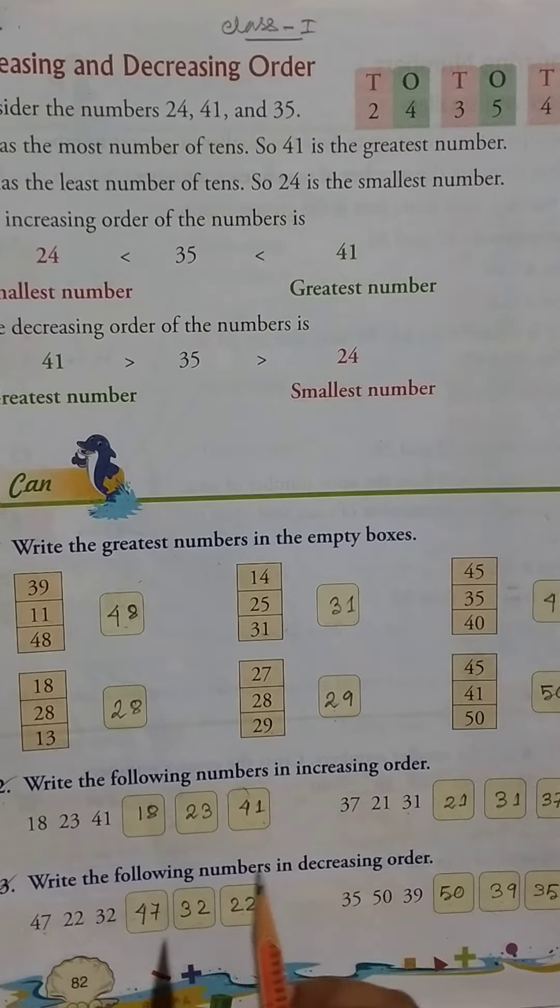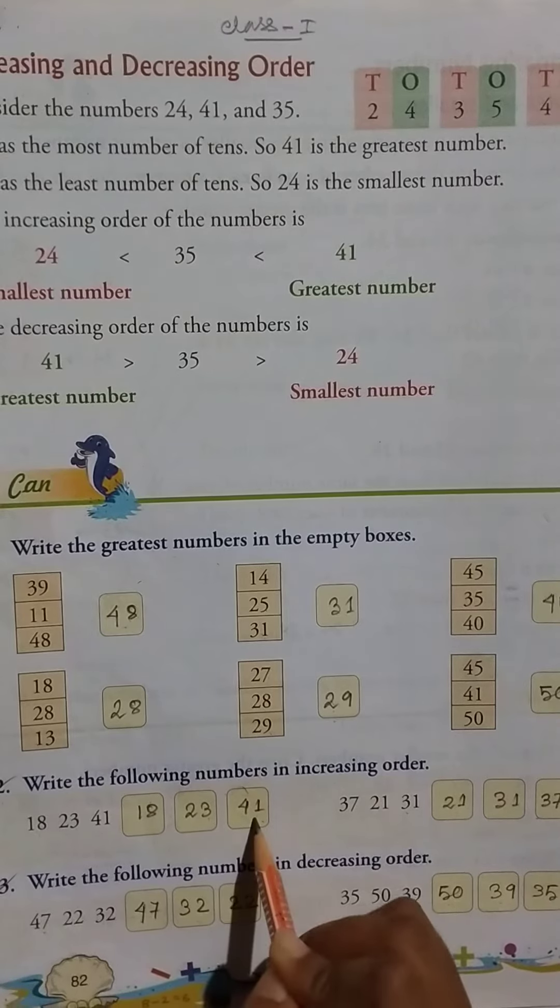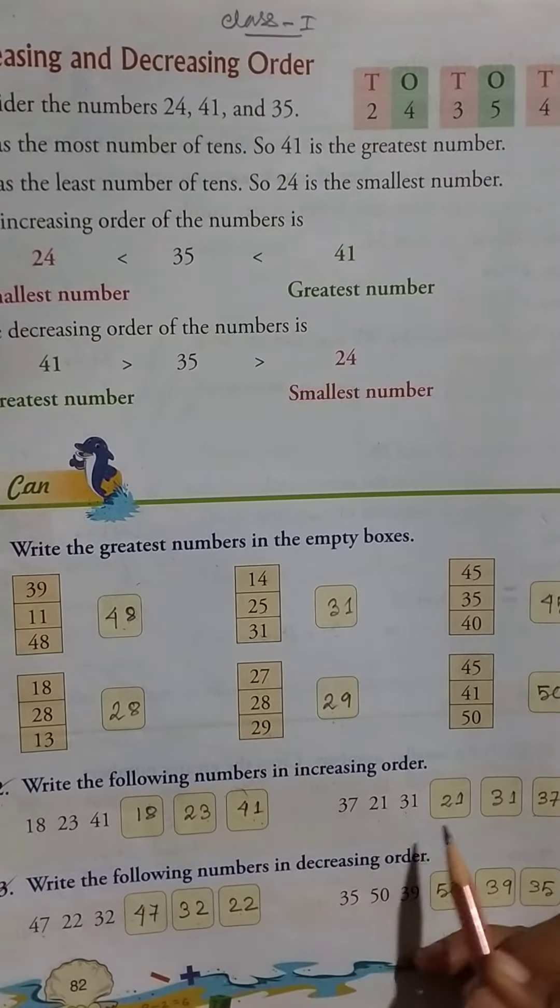Here 21, 31, 37. Now write the following numbers in decreasing order. Decrease means boru theke choto.